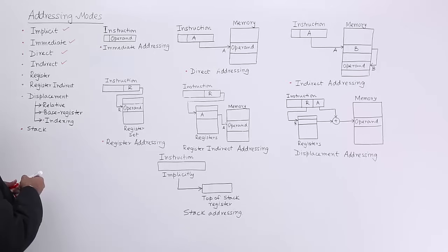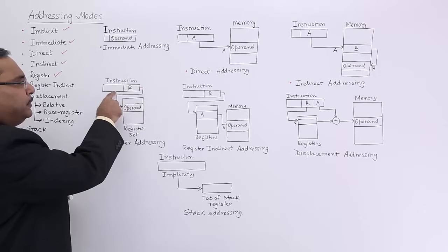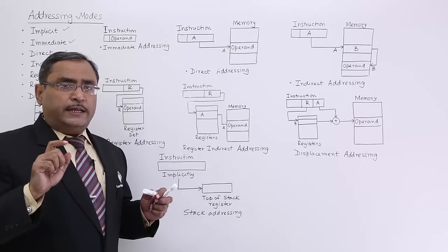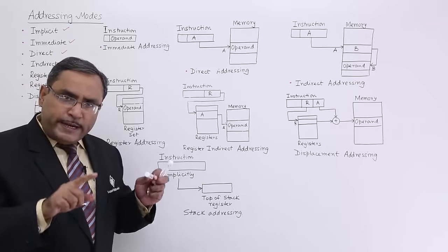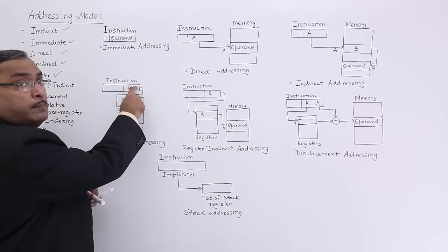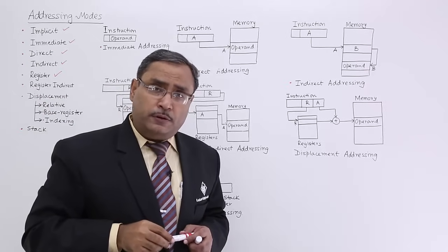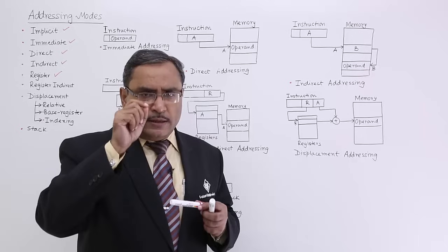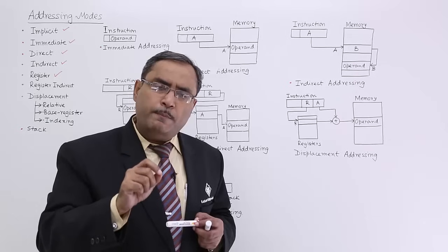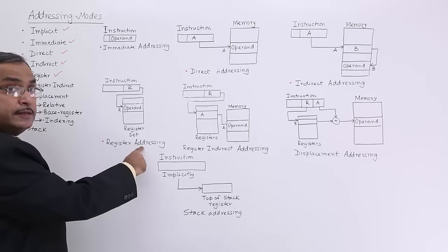Next is register addressing. In case of register addressing, the instruction contains the opcode and a register name. Each architecture has a set of registers. Depending upon the register number, one register is selected automatically. The unique identification of the register is done by the register name mentioned in the instruction. This is register addressing mode.